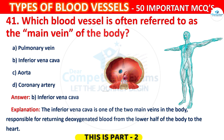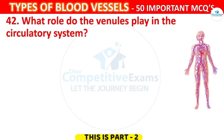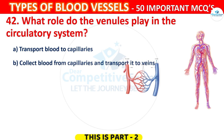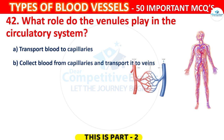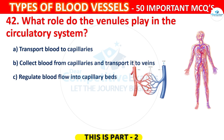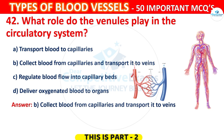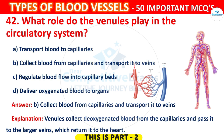Question 42. What role do venules play in the circulatory system? Options: Transport blood to the capillaries; Collect blood from capillaries and transport it to veins; Regulate blood flow into capillary beds; or Deliver oxygenated blood to organs. The correct answer is B. Venules collect deoxygenated blood from the capillaries and pass it to the larger veins, which return it to the heart.